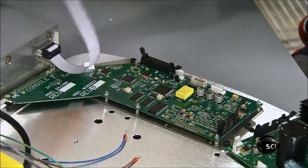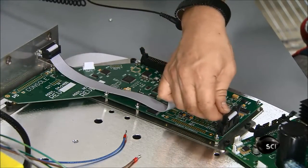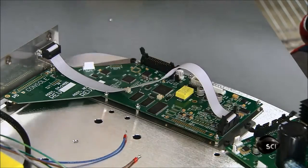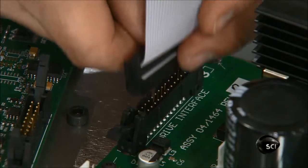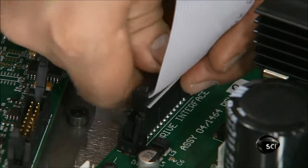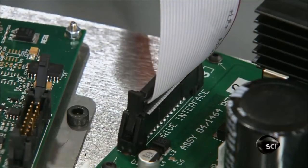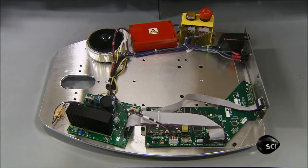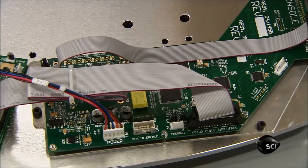He connects a ribbon cable to the main circuit board. He connects the other end of the cable to the motor drive board. This allows them to communicate. And finally, he completes the power supply connections.